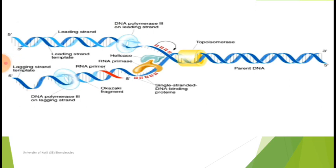The DNA exists in helical form and different enzymes are involved in replication. One strand acts as the parental strand while the other is the complementary or duplicate strand. One strand runs 5′ to 3′ and the other runs 3′ to 5′. There are two types of strands involved: the leading strand, which is a continuous strand synthesized continuously as the complement of the parental strand; and the lagging strand, which is synthesized discontinuously in the form of fragments called Okazaki fragments, which later join to form the complete complementary strand.